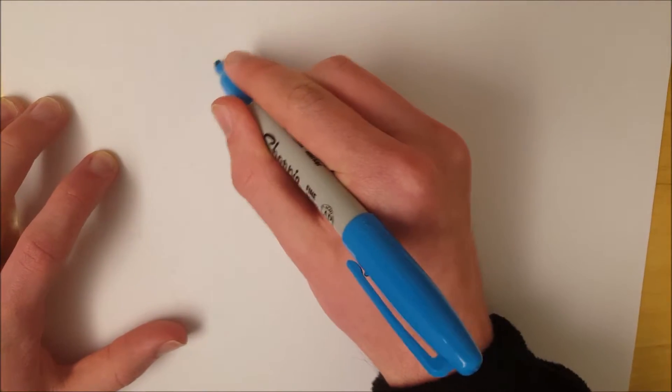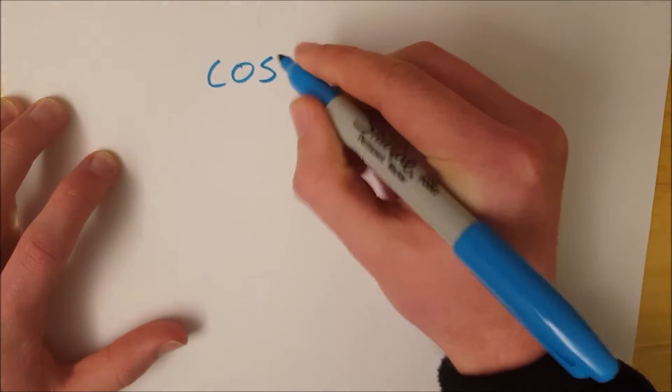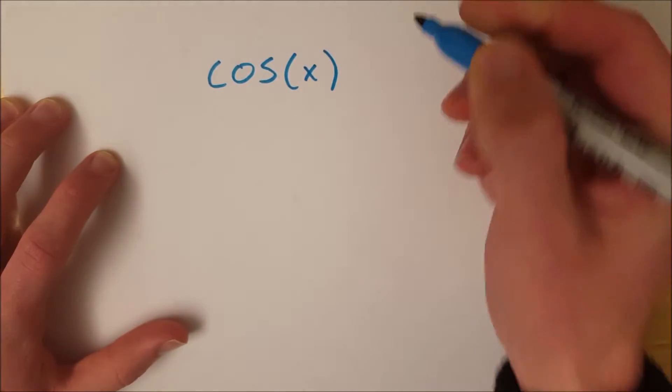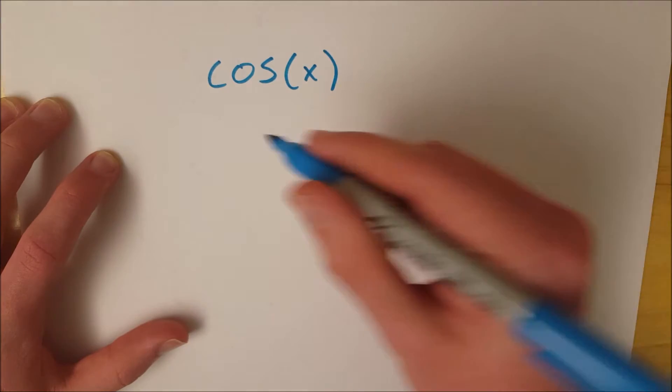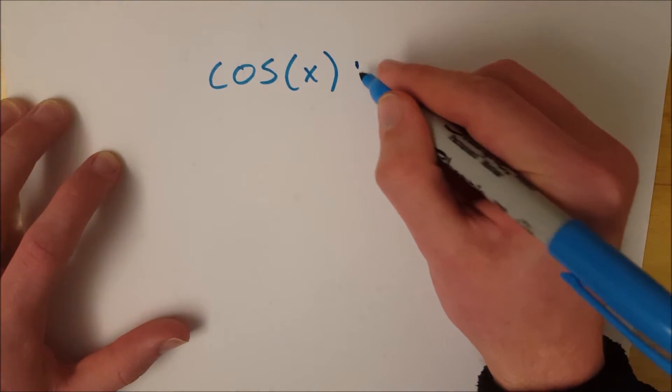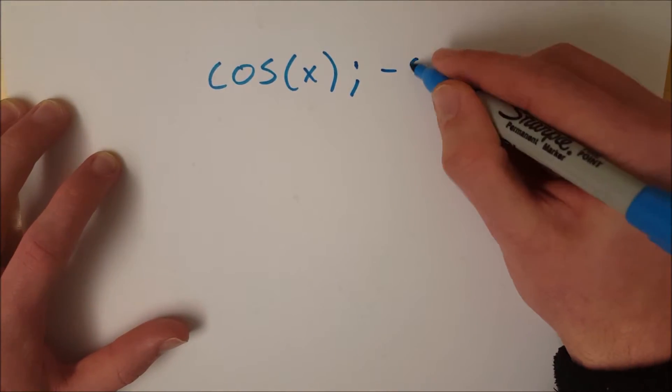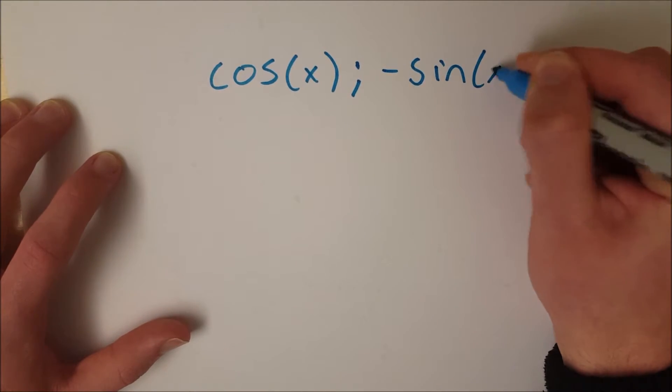So let's say we want to take the derivative of cosine of x. Well that's easy. The derivative of cosine is negative sine. I'll just put a semicolon here since I haven't named this function. So it's just negative sine of x. Pretty easy.